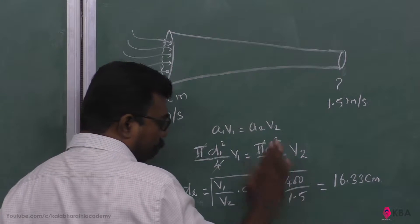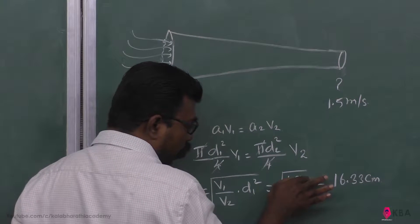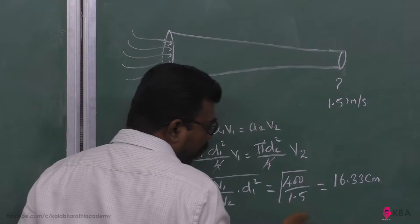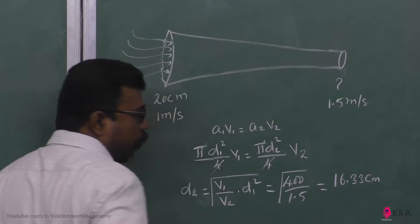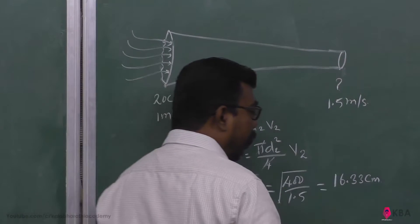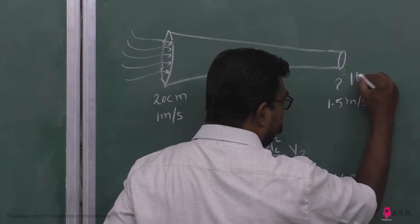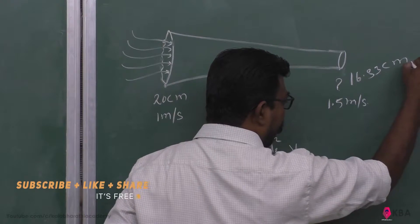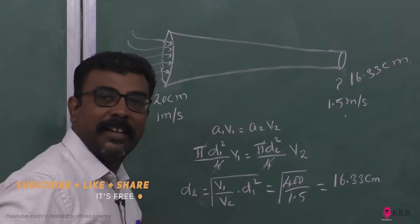Now, the answer is in centimeter. So, I will calculate this. This is 400. If you calculate, the answer is 16.33 centimeter. You have 20 centimeter, you have 16.33 centimeter diameter. Therefore, speed is increased.